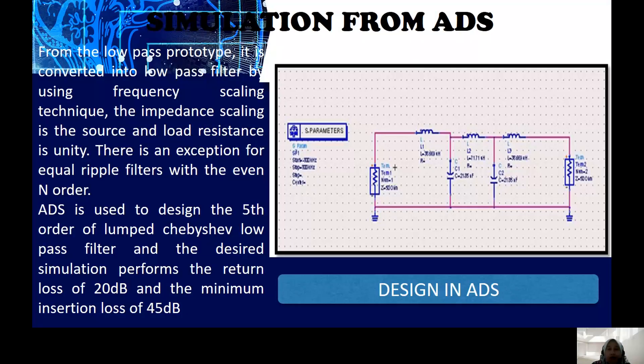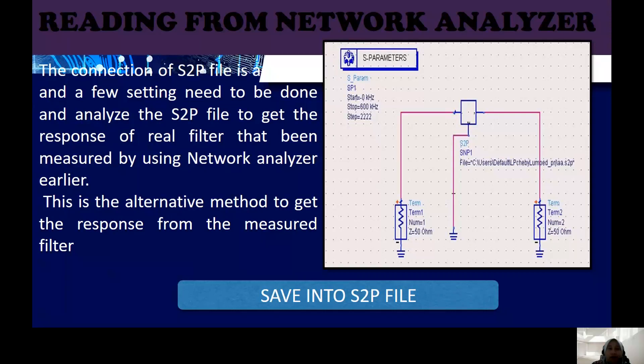This is the results from the ADS, which is the schematic from ADS. The ADS that we used to design the fifth order lumped Chebyshev low-pass filter and the desired simulation performed the return loss of 20 dB and the minimum insertion loss of 45 dB. This one is the S2P file connection, which is the alternative method that we can use to read from the network analyzer.